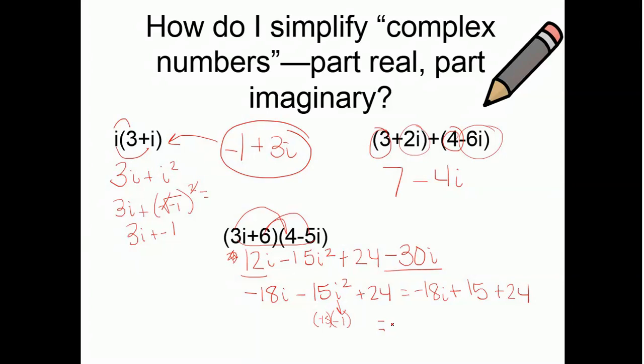So, I'll have negative 18i plus 15 plus 24. So, if I write this as the real part, or the numbers together first, and then the i part. So, 15 plus 24, that is 39. And I'm going to put the i part second here. Done with that particular problem.